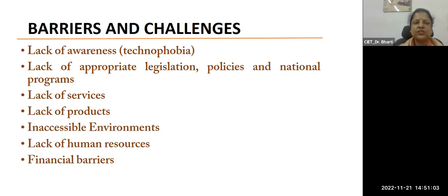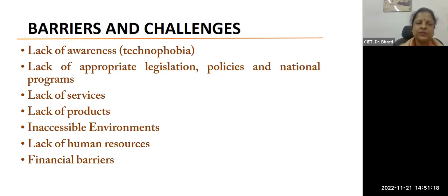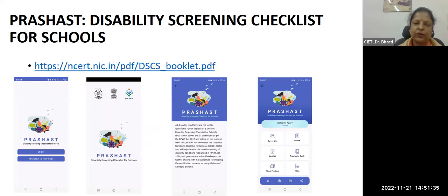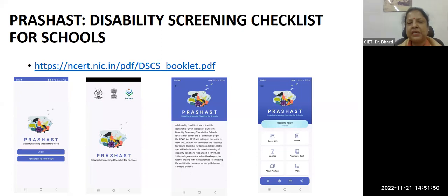What are the barriers and challenges? Lack of awareness, technophobia, lack of appropriate legislation and policies, programs, services, products, inaccessible environment, lack of human resources, and financial barriers. Recently, NCERT has launched a disability screening checklist for schools, which can be downloaded as an Android app from the Play Store. Just go through this app - it will help you in screening children with disabilities at the school level. Very easy to use, at the moment available only in English, but soon will be made available in Hindi and other languages.